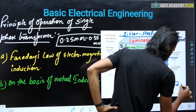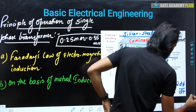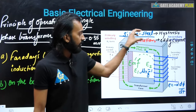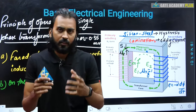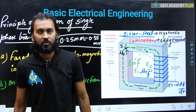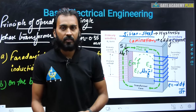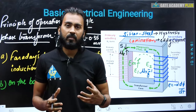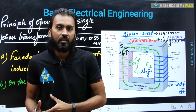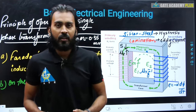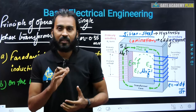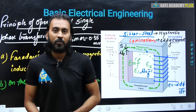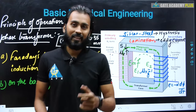The transformer works purely on Faraday's law of electromagnetic induction. Step-up and step-down transformers work on this basis: same flux, but if you increase the number of turns N on the secondary, the EMF increases (step-up), and if you reduce N, EMF reduces (step-down). In upcoming videos, we will cover open-circuit and short-circuit tests. Please watch the previous video on construction if you haven't. Thank you very much, students.